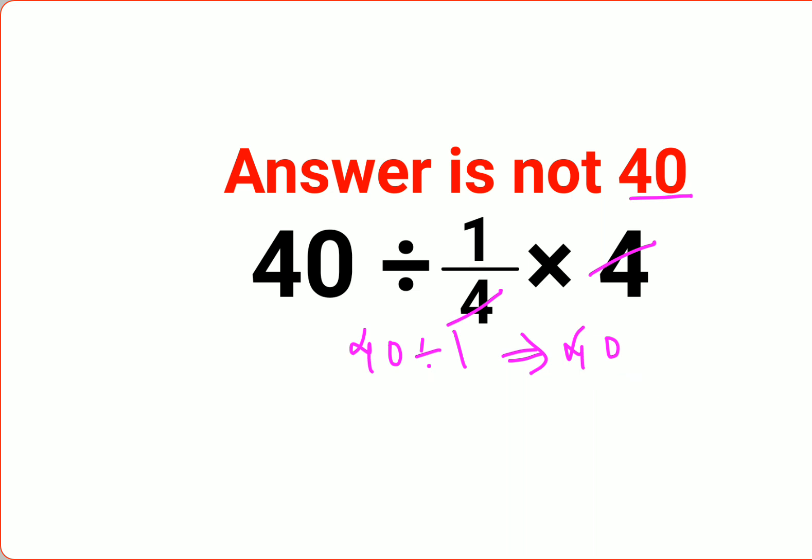Now the problem here is this is incorrect. Why? Please always remember: whenever you have division and multiplication, they hold equal precedence.